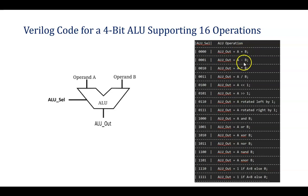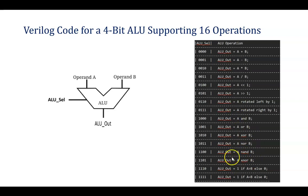Here you are able to see addition, subtraction, multiplication, division, left shift by one, right shift by one, rotate left by one, rotate right by one. Logical operations such as A AND B, A OR B, A XOR B, A NOR B, A NAND B, A XNOR B, and relational operations such as A greater than B and A equal to B are also performed. As per your requirement, you can take different operations. Since we have used a 4-bit ALU select, we are able to perform 16 operations.